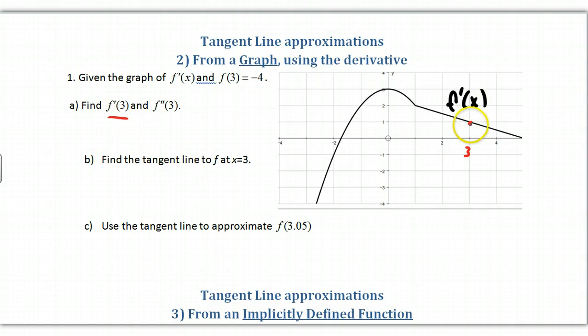Part A says find F prime of 3 and F double prime of 3. If it's F prime of 3 and they gave us the graph of F prime of 3, we just read it right off the graph. What is that point? It looks like 3, 1 to me. F prime of 3 turns out to be 1. If we do F double prime of 3, that's the slope of F prime.